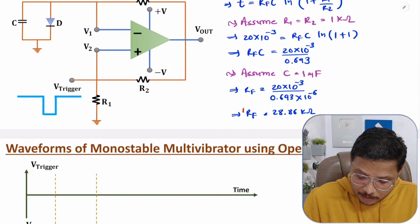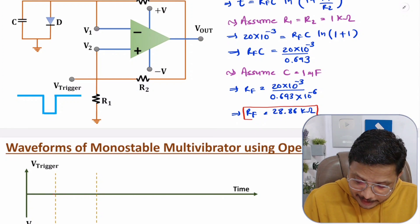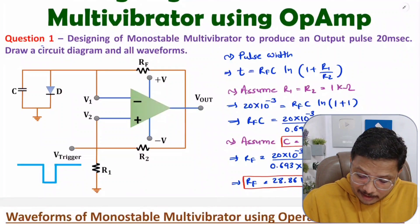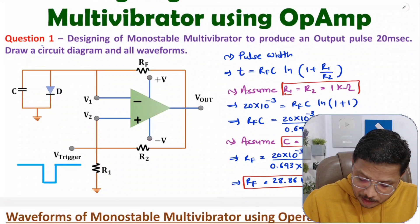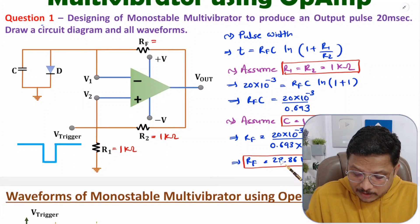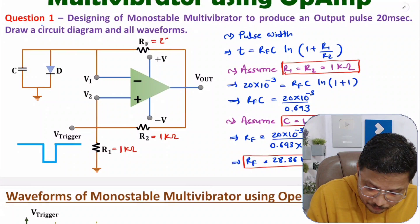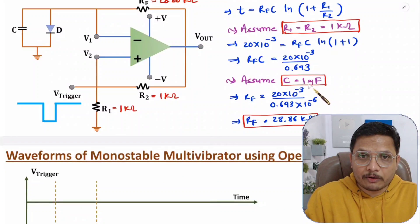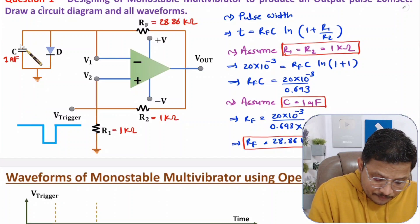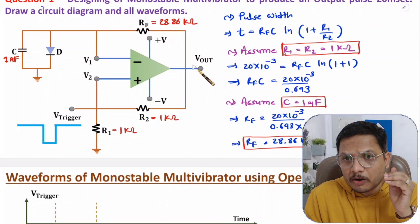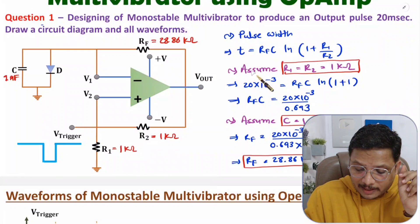Now I will place the values of the components in the circuit. With these values, you will get a width of pulse of 20 milliseconds. So the component values are: R1 = 1 kilo-ohm, R2 = 1 kilo-ohm, RF = 28.86 kilo-ohm, and C = 1 micro-farad. If you use these component values, the output will have a pulse width of 20 milliseconds as per the equation.